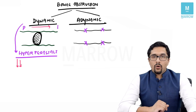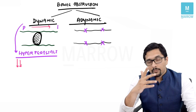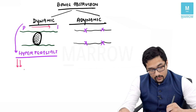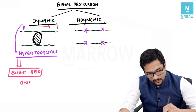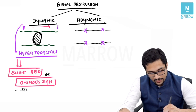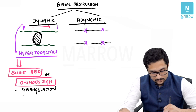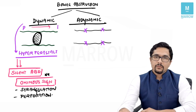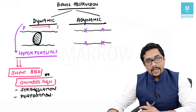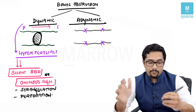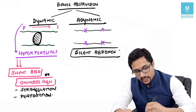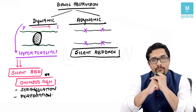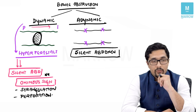But if you keep blowing the horn for a very long period, sometimes the battery of your car can die. A silent abdomen in dynamic obstruction is an ominous sign. Silent abdomen in dynamic obstruction means that either strangulation has occurred or perforation has occurred. A silent abdomen is a normal finding in adynamic obstruction, but in dynamic obstruction it's an ominous sign. This is something to remember for the exam.